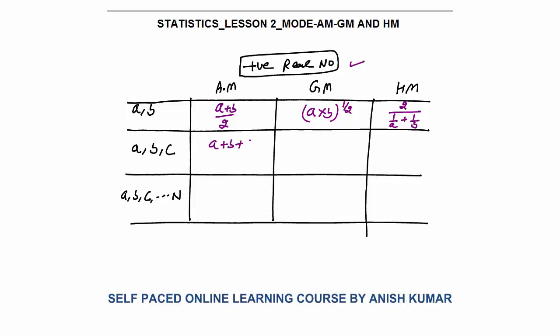For three numbers same, arithmetic mean simply means average a plus b plus c by 3. Geometric mean simply multiplied the number power 1 by 3. If there are three numbers, power would be 1 by 3. If there are four numbers, power would be 1 by 4. And harmonic mean would be 3 upon 1 by a plus 1 by b plus 1 by c.